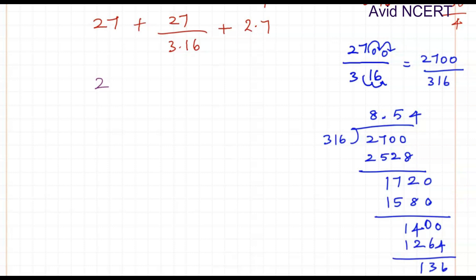Substituting the value here which is 27 plus 27 divided by 3.16 is 8.54 plus 2.7. So adding this we can get the answer. So which is 27 plus 8.54 and 2.7. So you can fill these blank spaces with zeros if it would be confusing for you. So 0 plus 4 is 4, 7 plus 5 is 12, carry 1. So decimal point. 1 plus 8 is 9 and 2 is 11, carry 1. So 38.24 is the answer.